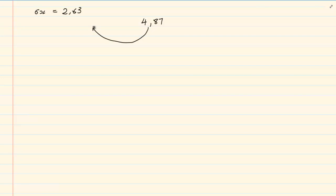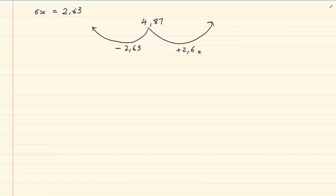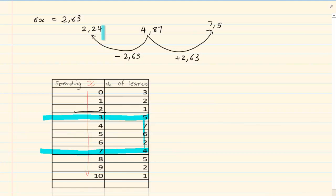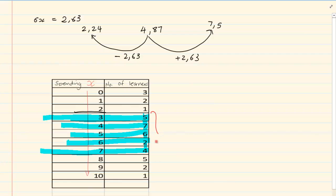We have the standard deviation as 2.63 and the mean as 4.87. If they want to know how many are within one standard deviation, we subtract and add 2.63. So 4.87 minus 2.63 equals 2.24, and 4.87 plus 2.63 equals 7.5. So we are looking at how many children fall between 2.24 and 7.5. That means values 3, 4, 5, 6, and 7 fall in that range, but 8 would not. Totalling: 5 plus 7 plus 6 plus 2 plus 4 equals 24.